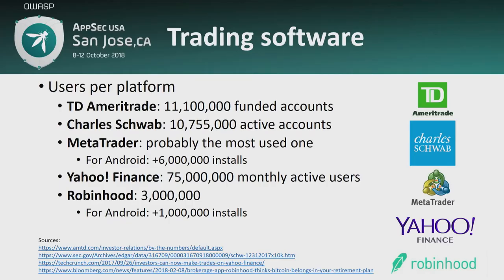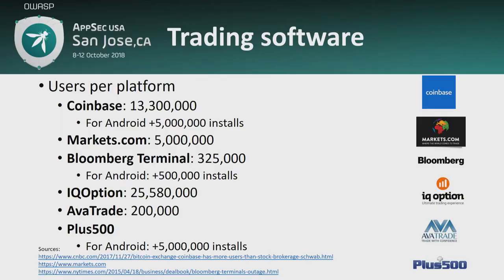What is trading software? Trading software allows you to fund your account via a credit card or connect your banking account to buy or sell stocks, monitor the performance of your portfolio, receive market data, et cetera. Some of the most used platforms are TD Ameritrade, Charles Schwab, Metatrader, Yahoo Finance — which used to be for market research only but now allows you to connect trading applications — Robinhood, Coinbase for crypto, Bloomberg terminal which is very expensive at more than $20,000 per year per terminal, IQ Option, Navitrade, et cetera.